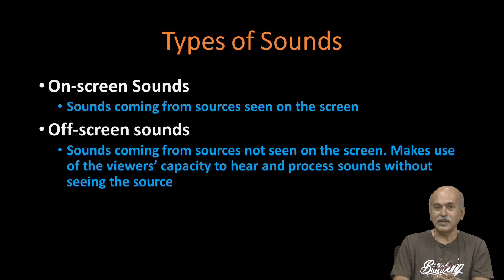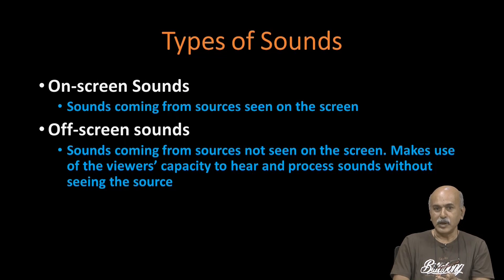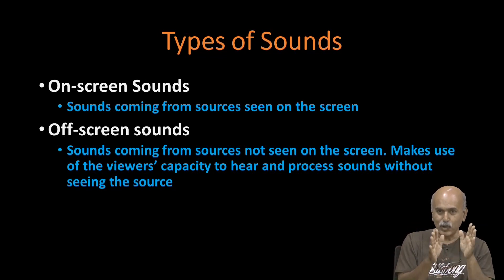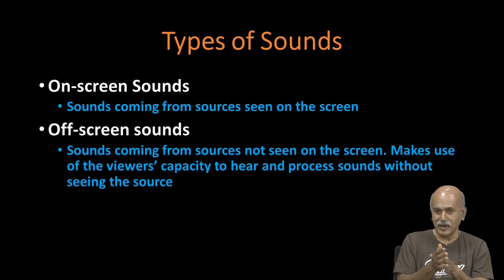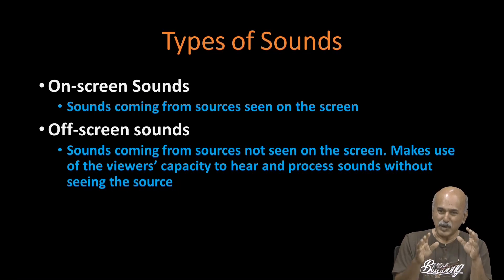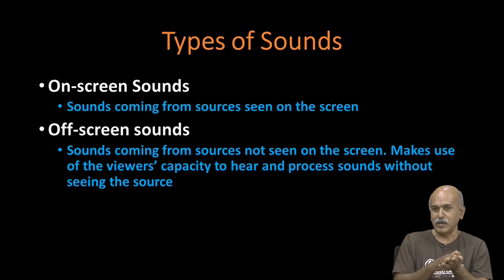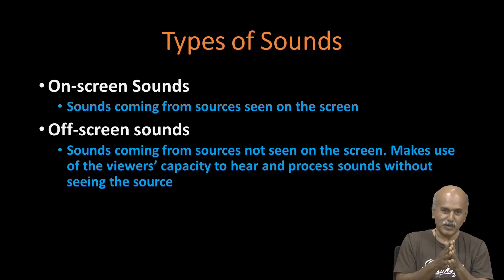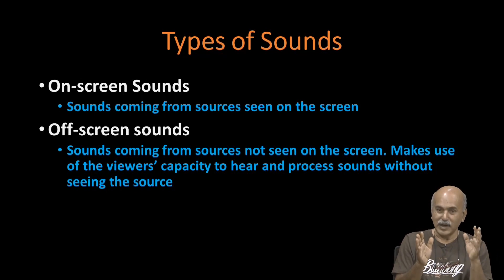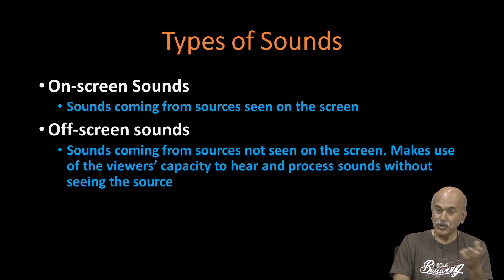There are on-screen sounds and off-screen sounds. On-screen sounds are sounds whose source you can see — someone speaking on screen, or somebody starting a bike and you hear the sound. Off-screen sounds come from somewhere else but you know where they are coming from — you hear something spoken in the next room, not seen in the frame, but you know its source. Off-screen sounds are not the same as asynchronous or non-diegetic sounds; they are sounds whose source you know, but simply do not see.